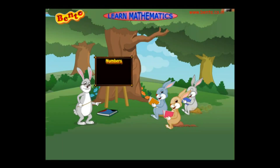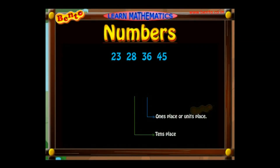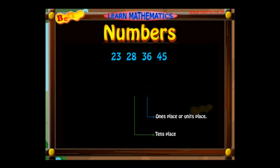Let us see some more examples for two-digit numbers and why we call them so. The first number is read as 23 because it has a 20 — that is two tens — and a three in it. The second number is read as 28 because it has a 20 and an eight in it, that is two tens and eight units.